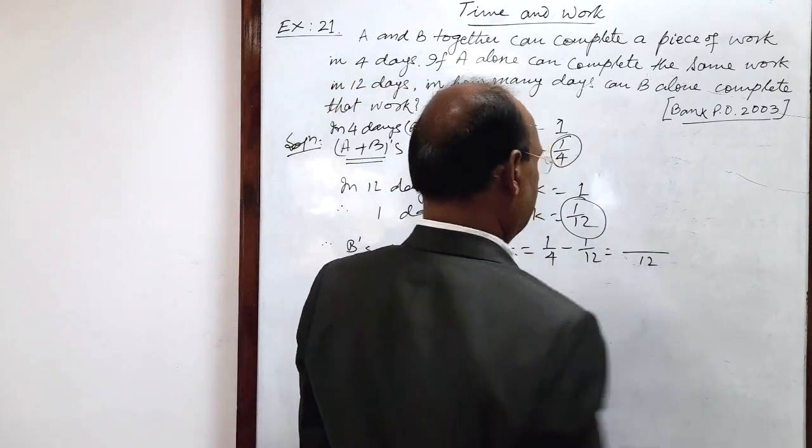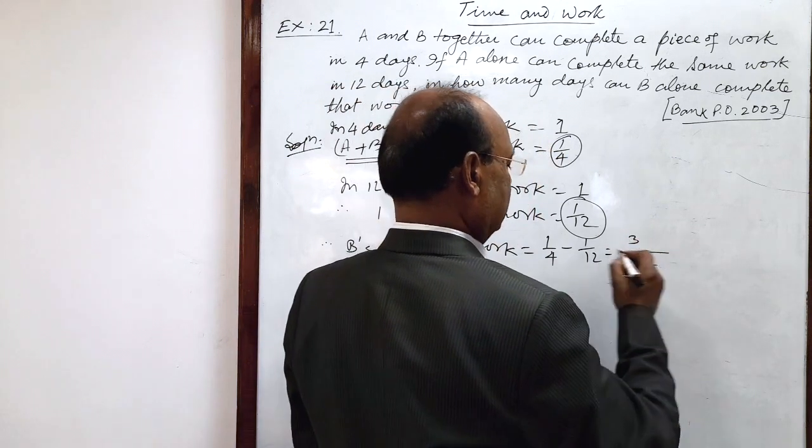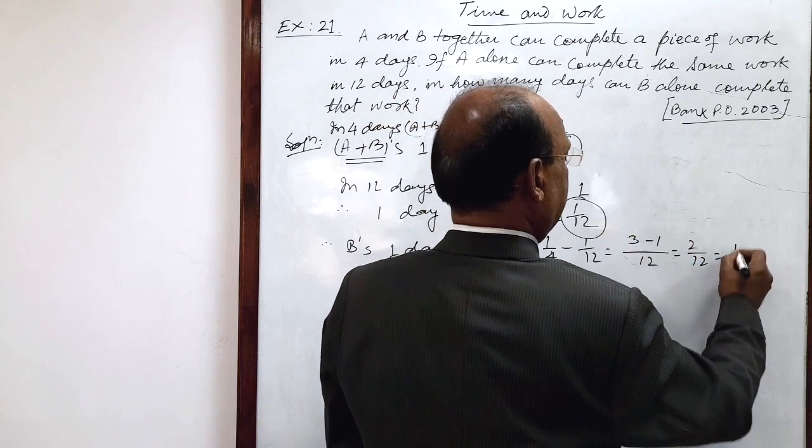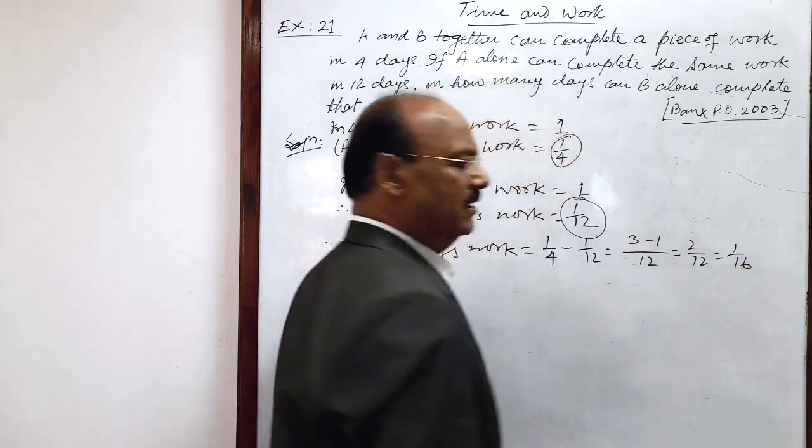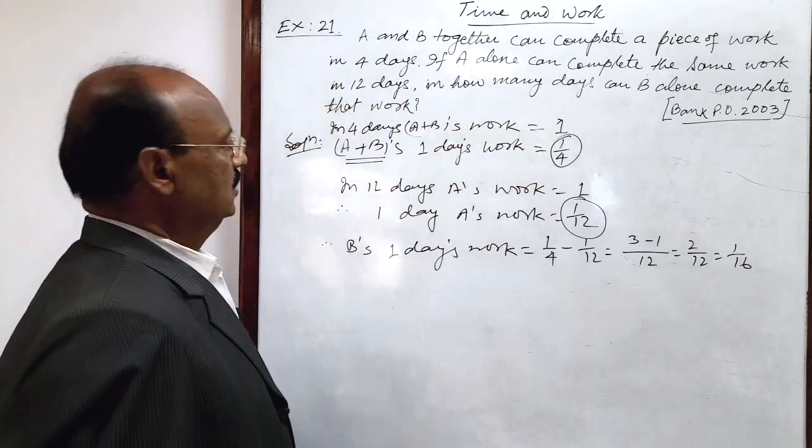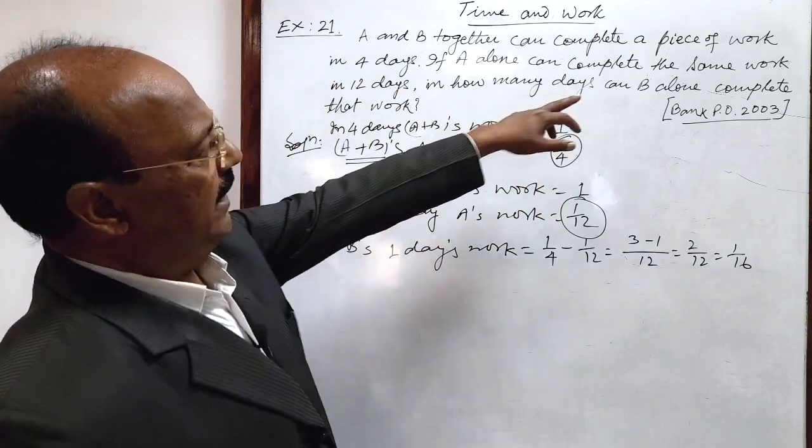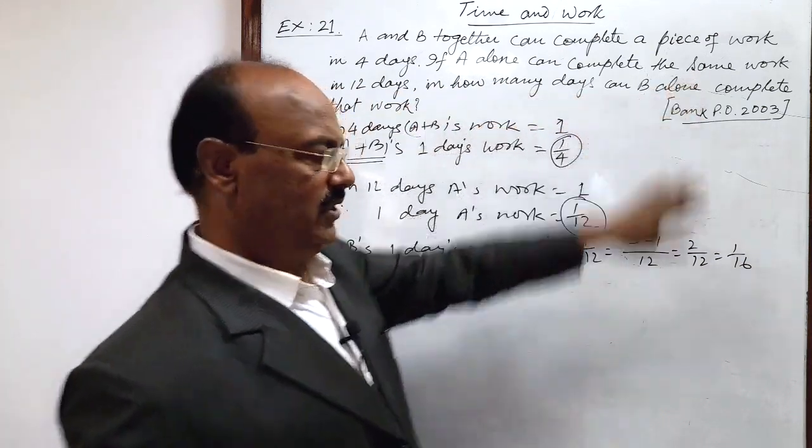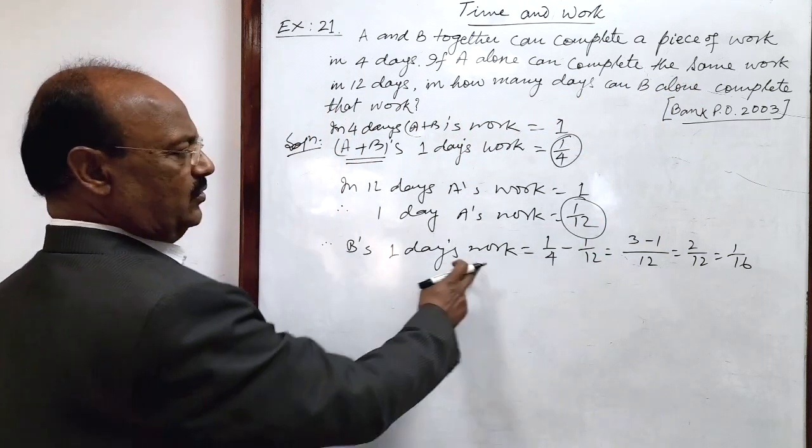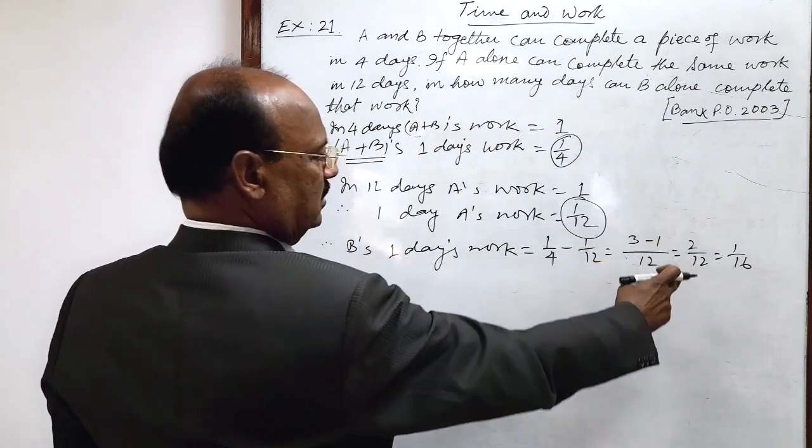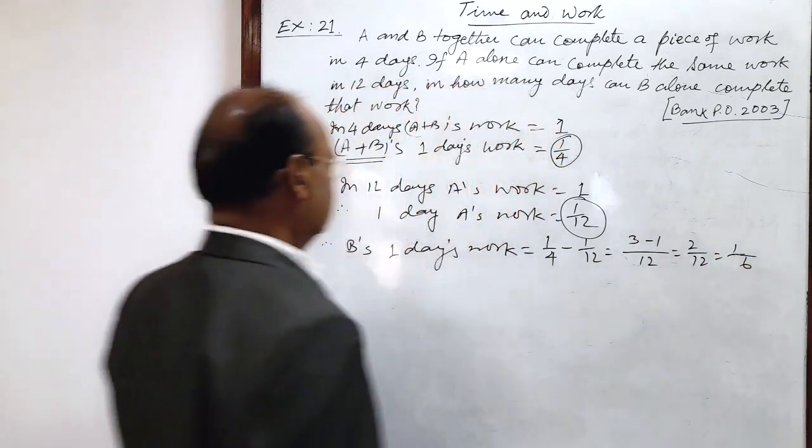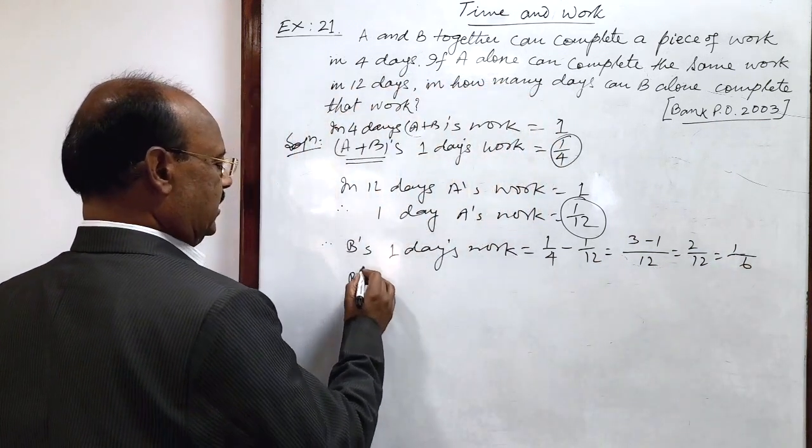Here LCM is 12, 4 threes are 12 minus 1 that is 2 by 12. This is equal to 1 by 6. Here we have to find number of days required by B to complete this work. So B's one day's work is one by six. Sorry, not 16. This is one by six. We are getting here B's one day's work is one by six.